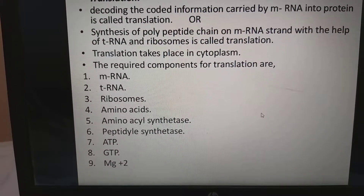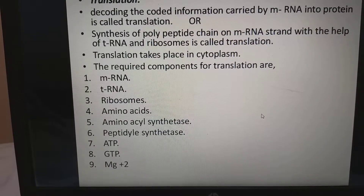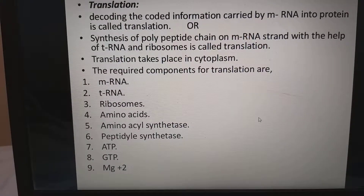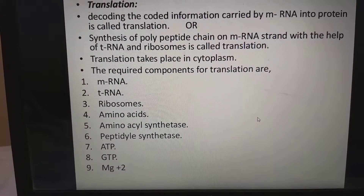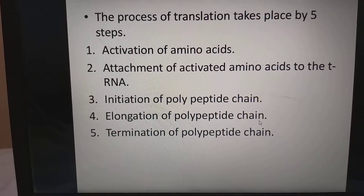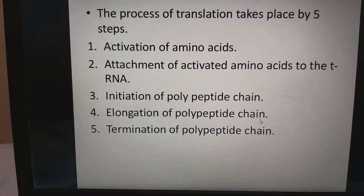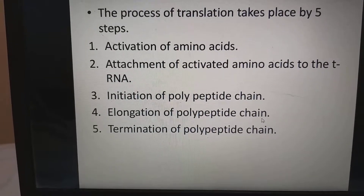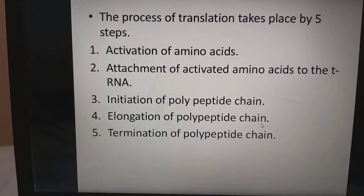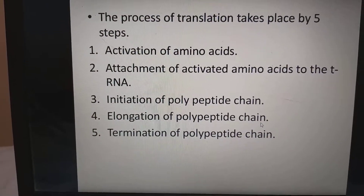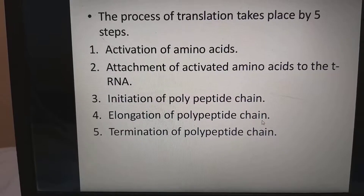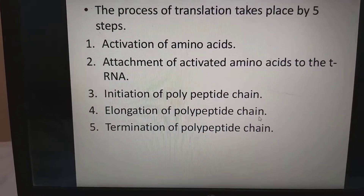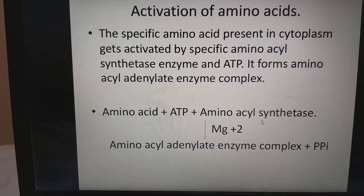Translation takes place in the cytoplasm. The required components for translation are mRNA, tRNA, ribosomes, amino acids, aminoacyl synthase, peptidyl synthase, ATP, GTP, and magnesium ions. The process of translation takes place in 5 steps: activation of amino acid, attachment of activated amino acid to tRNA, initiation of polypeptide chain, elongation of polypeptide chain, and termination of polypeptide chain.